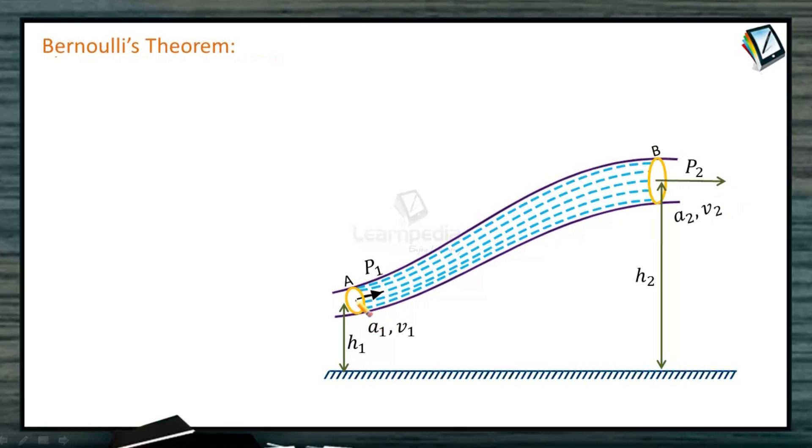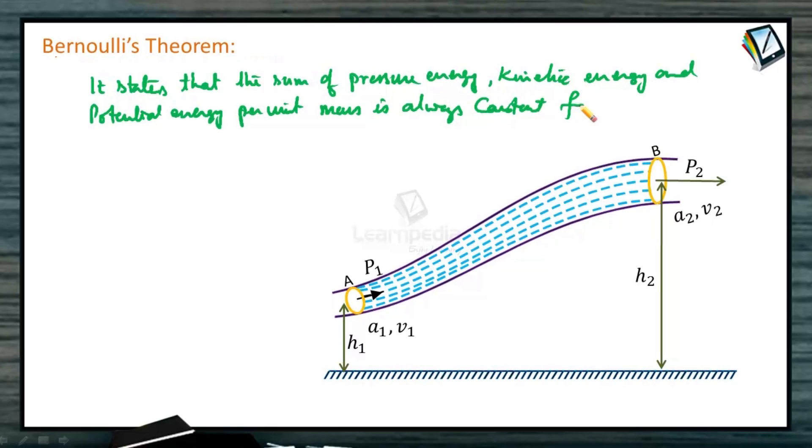That is, the kinetic energy per unit mass, potential energy per unit mass, and pressure energy per unit mass at point A and at point B should be equal. It states that the sum of pressure energy, kinetic energy, and potential energy per unit mass is always constant for an ideal, incompressible, and non-viscous fluid having streamline flow.